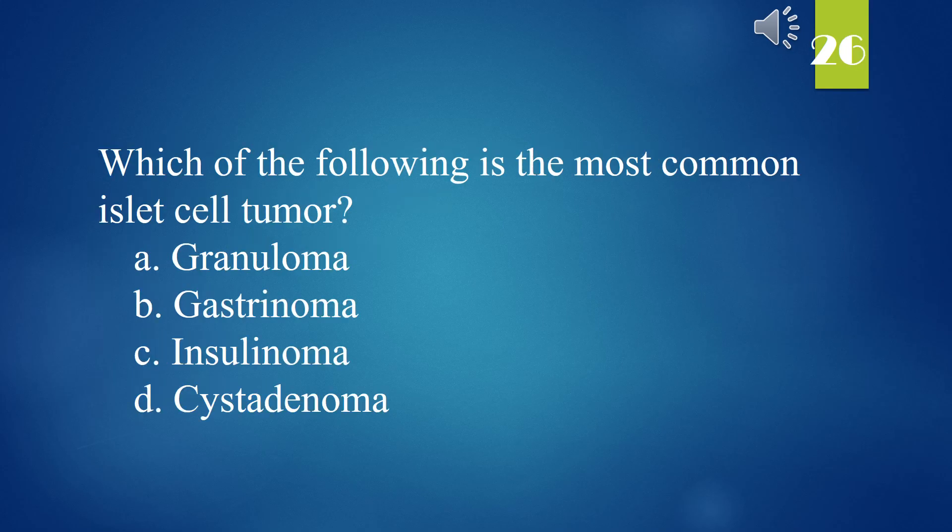Which of the following is the most common islet cell tumor? A. Granuloma. B. Gastrinoma. C. Insulinoma. D. Cystadenoma. The answer is C. Insulinoma.